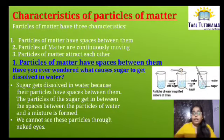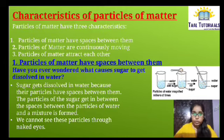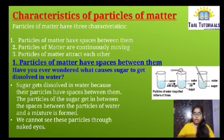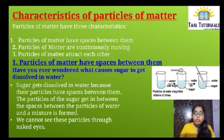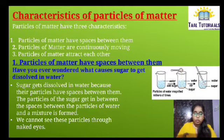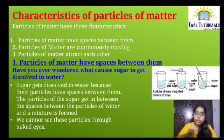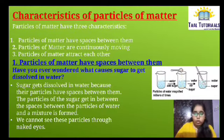Characteristics of particles of matter. We have three main characteristics. First, particles of matter have spaces between them. To understand this, consider: have you ever wondered what causes sugar to get dissolved in water? Sugar particles have spaces between them and water particles also have spaces between them. When we put sugar into water, the sugar settles in the spaces between the particles of water, and thus the sugar solution is formed. These sugar particles we cannot see through our naked eye.